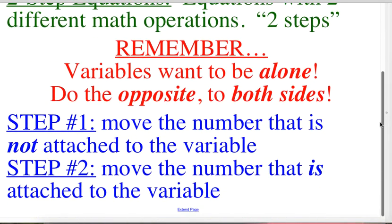A couple of reminders that you've probably seen a few times now. A reminder that variables want to be alone, and in order to get a variable to be alone with no numbers by hand, you always have to do the opposite, and you have to do it to both sides of the equation, meaning to the left side of the equal sign and to the right side of the equal sign. So, in my opinion, the best way to tackle these two-step equations would be down here in blue.